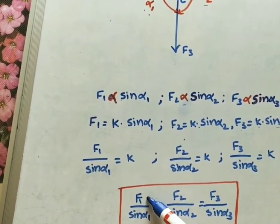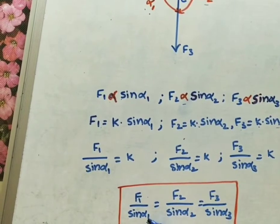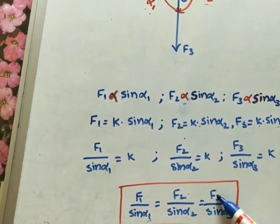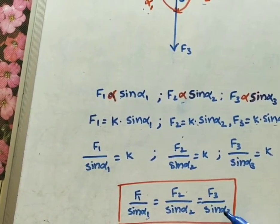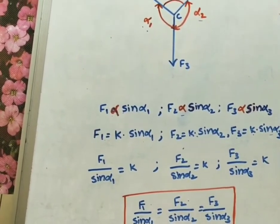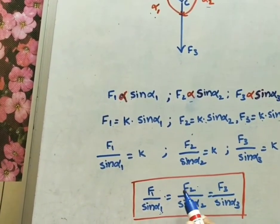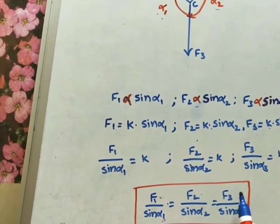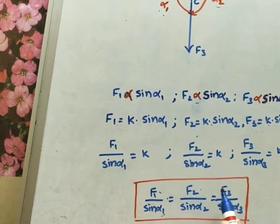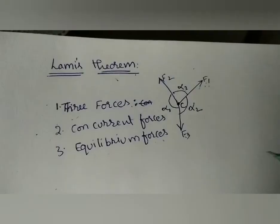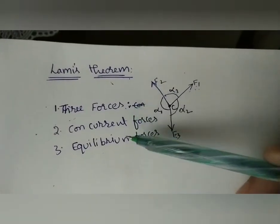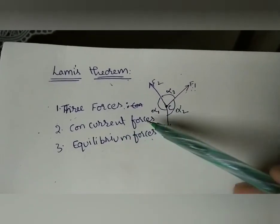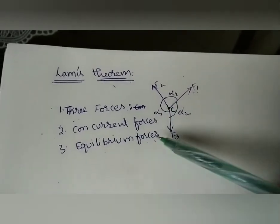The final form of Lami's Theorem is: F1/sin(α1) = F2/sin(α2) = F3/sin(α3), where each force is divided by the sine of its opposite angle. Using this, if any two forces are unknown and one is known, we can find the unknowns. The three conditions are: three forces, concurrent forces, and equilibrium forces.